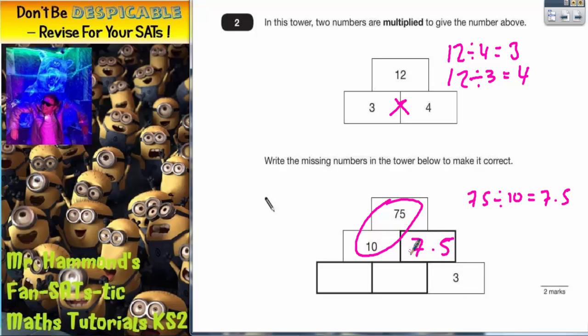Now we've got to use the 7.5 and the 3 to get this middle number at the bottom. 3 lots of this mystery number gives 7.5, but we're going to have to work in reverse. So we're going to need to do 7.5 divided by 3.